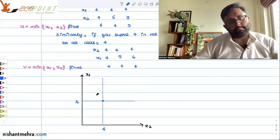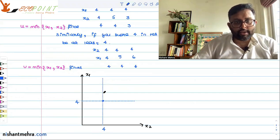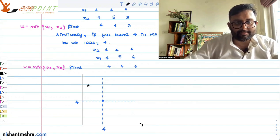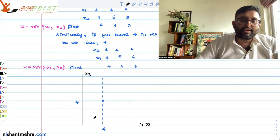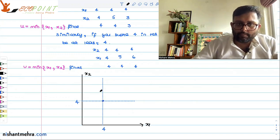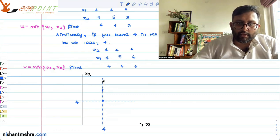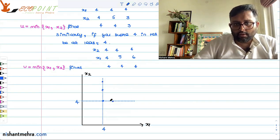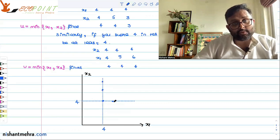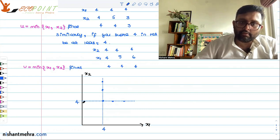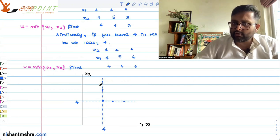If I am getting 4 in both tests, my final score is 4 only. If I score 4 in test 1 and 5 in test 2, my score is still 4. If I score 4 in test 1 and 6 in test 2, my score is still 4. If I score 4 in test 2 but 5 in test 1, the professor takes the minimum of the two scores, so the score is still 4. Even with 4 in test 2 and 6 in test 1, the score remains the same.